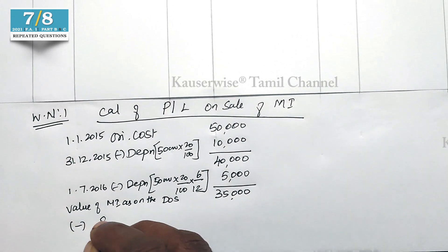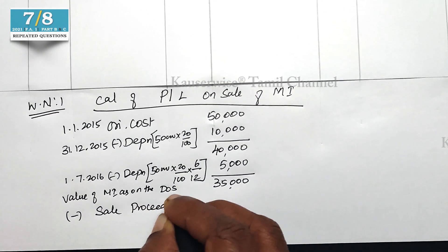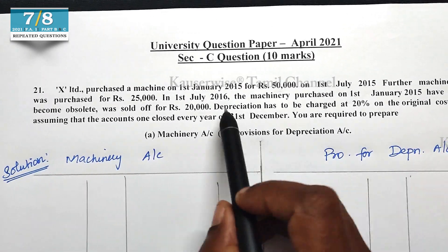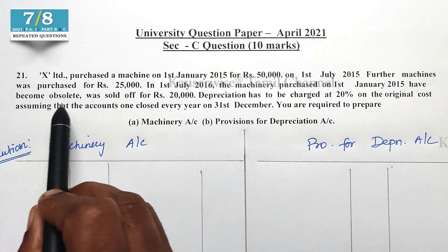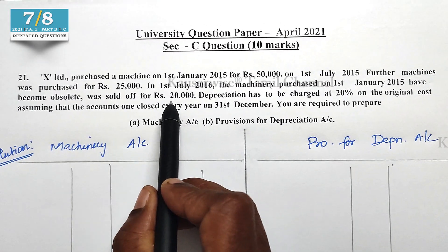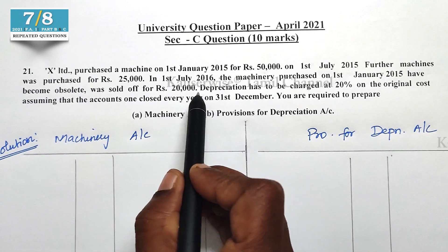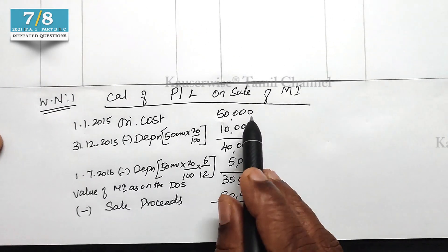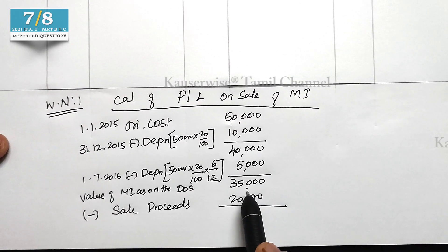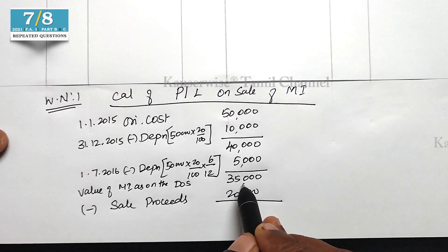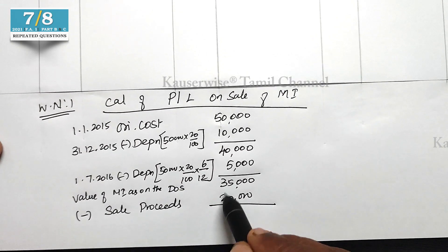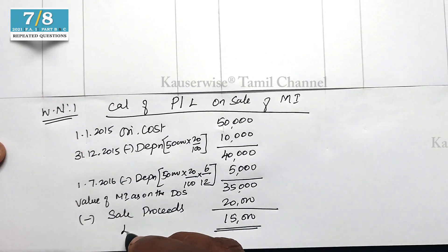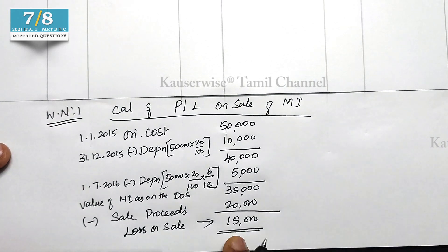Now we calculate the loss on sale. The value of the asset on the date of sale is 35,000, and the sale proceeds are 20,000. The difference is 35,000 − 20,000 = 15,000. This is a loss on sale of Machine 1. So we have a loss of 15,000. Now we will prepare the machinery account and provision for depreciation account.